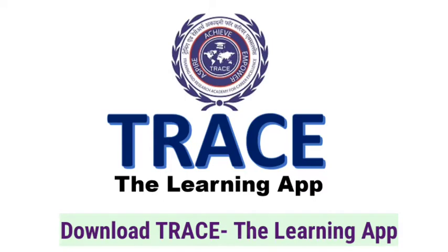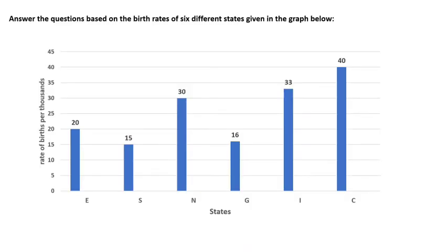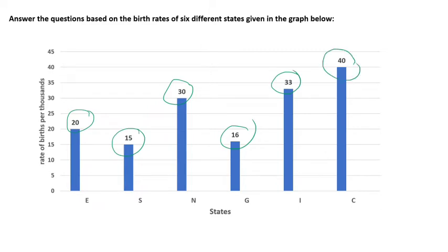The first question is based on a graph showing the birth rate of six different states. Here you can see states E, S, N, G, I, and C, with birth rates per thousand given as 20, 15, 30, 16, 33, and 40 respectively. Based on this graph we have some important questions to solve.